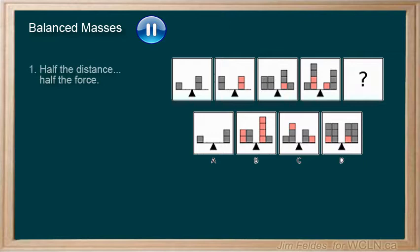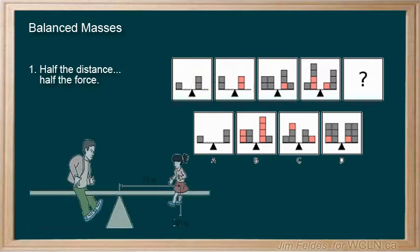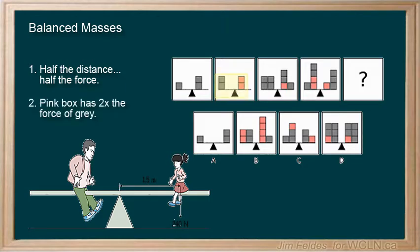If you are half the distance to the fulcrum, that is the triangle at the balance point, your force is reduced by one half, like two people with different masses on a teeter-totter. And the pink square has twice the force as the grey one. So which of the options is balanced?